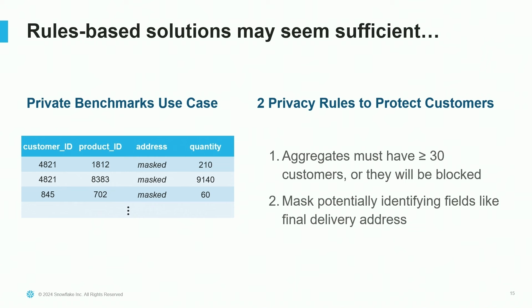Let's try to solve this using what I call privacy rules. A privacy rule is a heuristic approach — for example, an aggregate must have at least 30 customers, or that aggregate will be blocked. This kind of rule is put in place to make sure the data consumer isn't filtering down too granularly. I'll use two privacy rules: the aggregation rule, plus masking. In addition to the aggregation rule, I'll also mask identifying fields — in this case, I've masked the address field, which could be very identifying because a ShipCo customer might ship directly to a specific retail location.